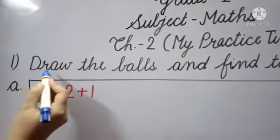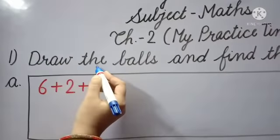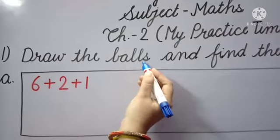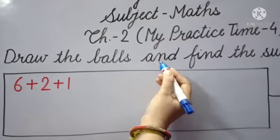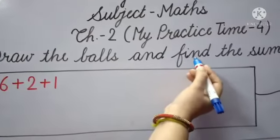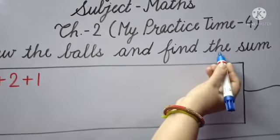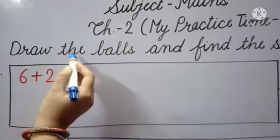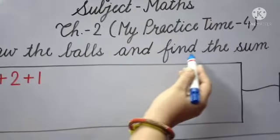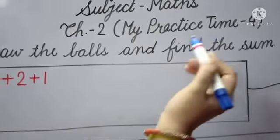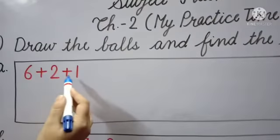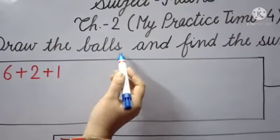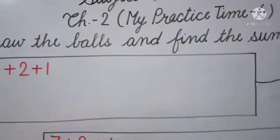Number 1: Draw the Balls and Find the Sum. This means with the help of the given numbers, we will draw the balls and solve the sum.